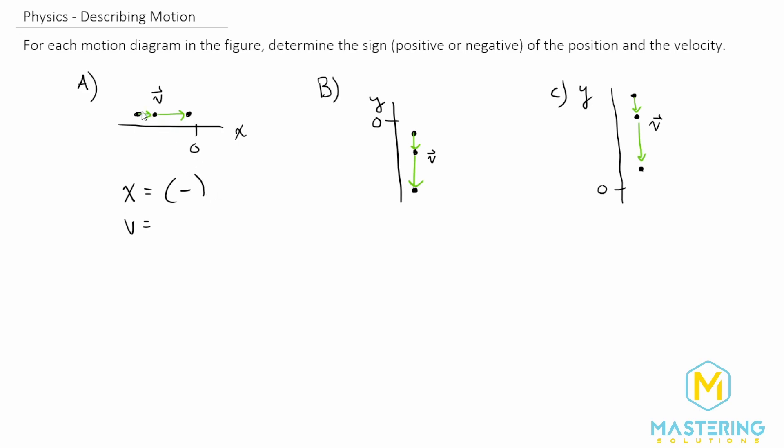Now the arrows are indicating the velocity and they're moving towards the positive x direction. So since they're going towards the positive, the velocity will be a positive v for part a.